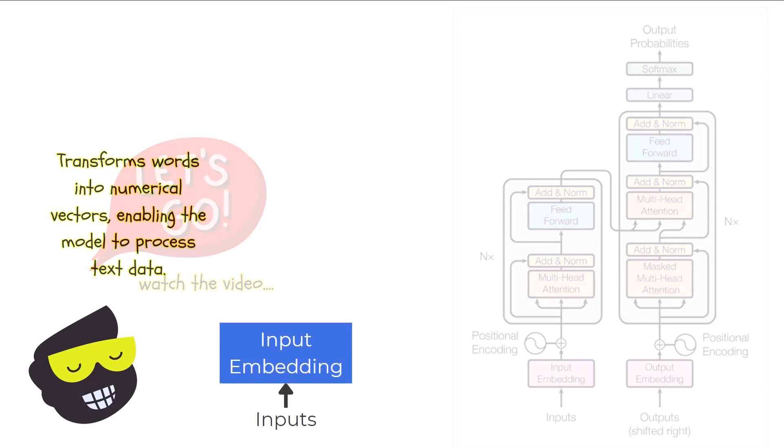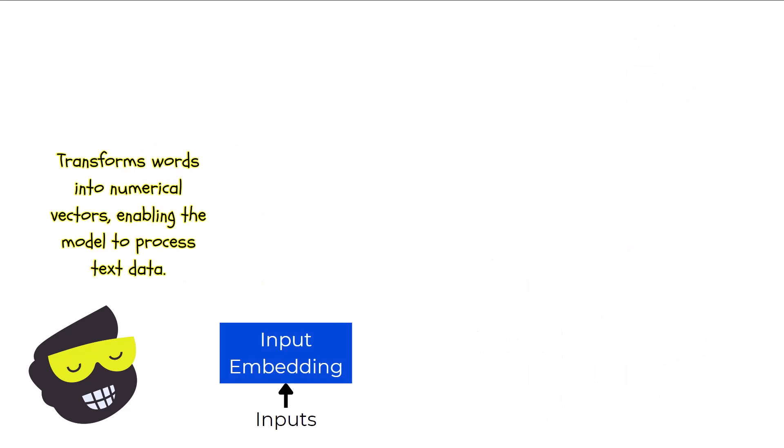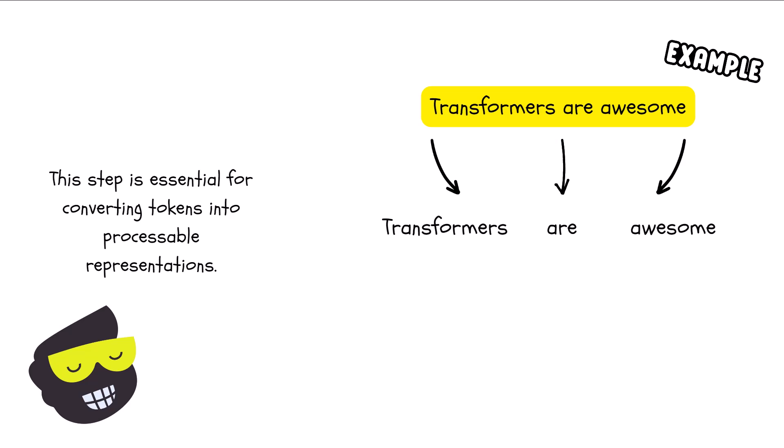The process begins with input embeddings, which transforms each token in the input sequence into a high dimensional vector. It essentially gives the model a way to understand the text in a numerical form, which is essential for the magic that happens next. For example, if the input is a sequence like transformers are awesome, each word is converted into a unique vector. This step is crucial for converting discrete tokens into continuous representation that the model can process.